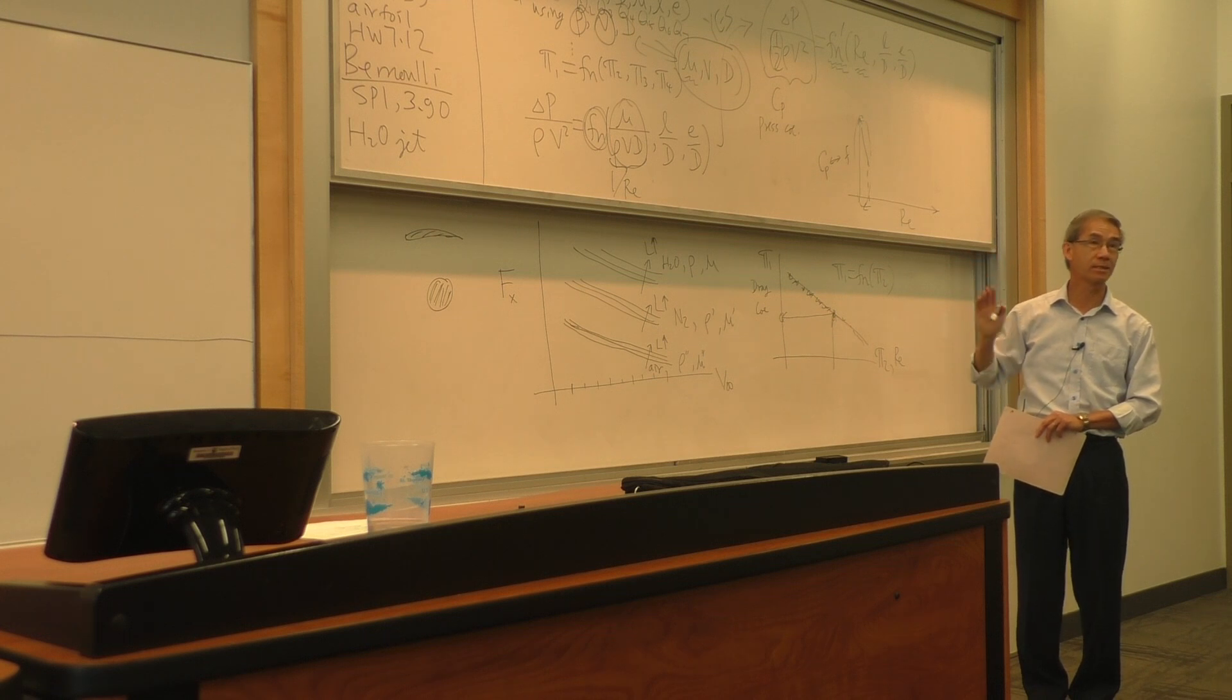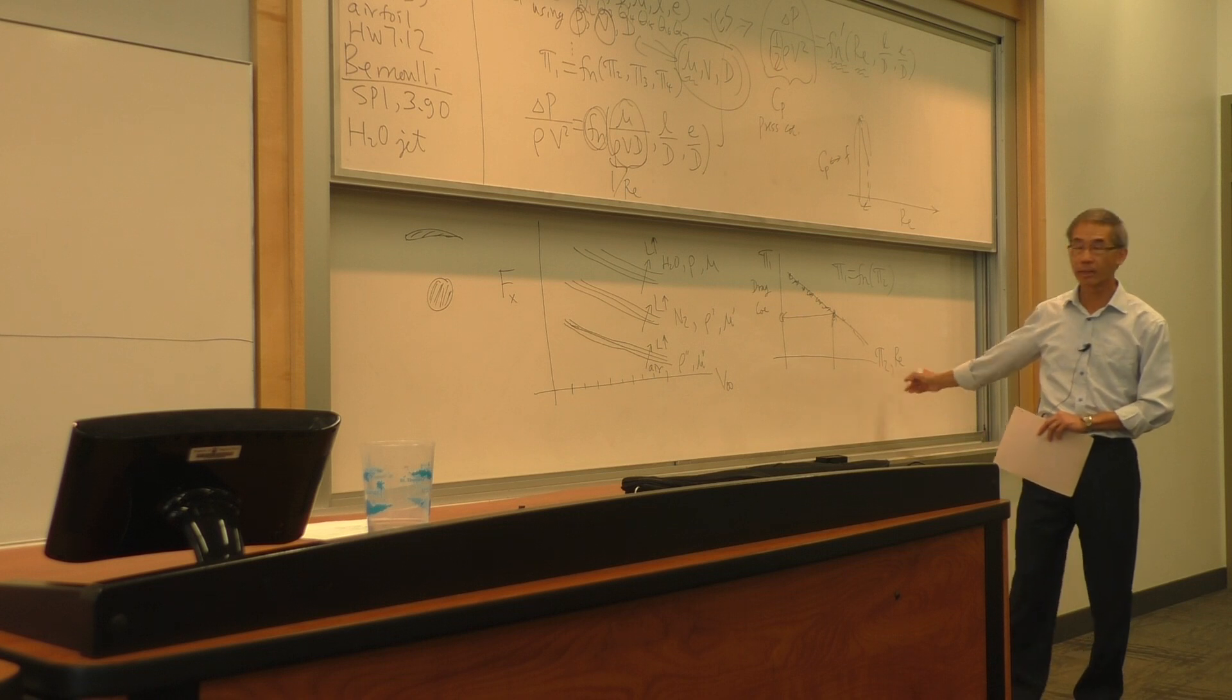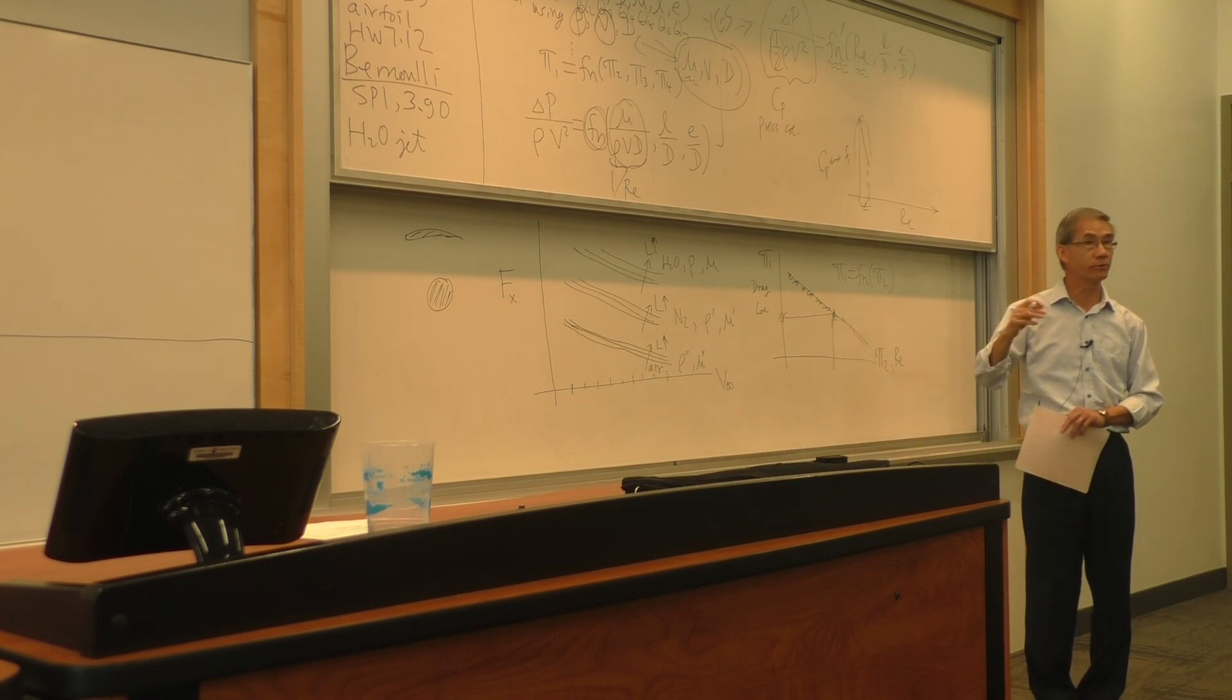All those shapes will result in a different function of how the drag coefficient changes with Reynolds number. But as far as dimensional analysis is concerned, they didn't change. It will still be pi one, which is some type of force coefficient, drag, and the Reynolds number. So we do it once and we do it for all.